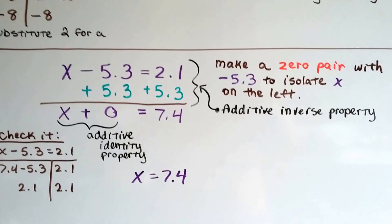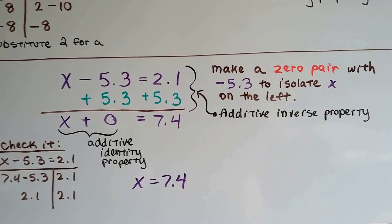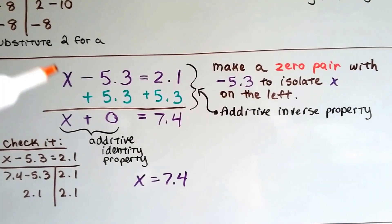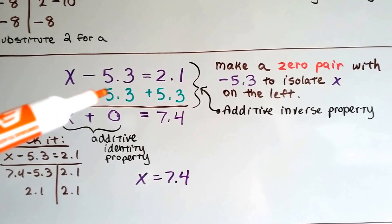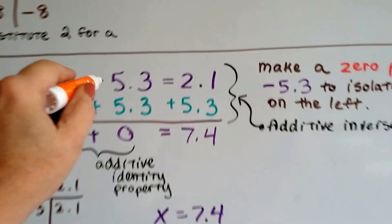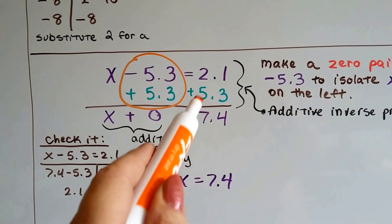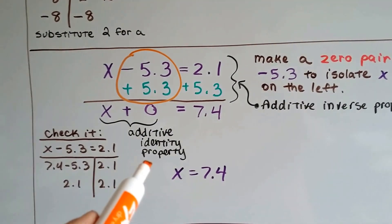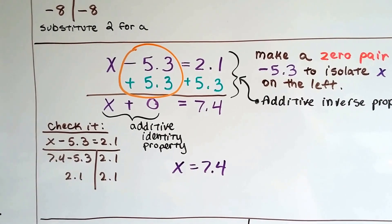Let's do it again with decimals. We've got x take away minus 5.3 is going to equal 2.1. We make a zero pair with the negative 5.3 to isolate this x on the left side. So the additive inverse property says we can add a positive 5.3 to both sides of the equal sign. That's going to create our zero pair right here. See? And 2.1 plus 5.3 is 7.4. So x is equal to 7.4. The additive identity property says if we add a zero to this x, it's going to stay in x. So x is equal to 7.4. See? See how we do that?